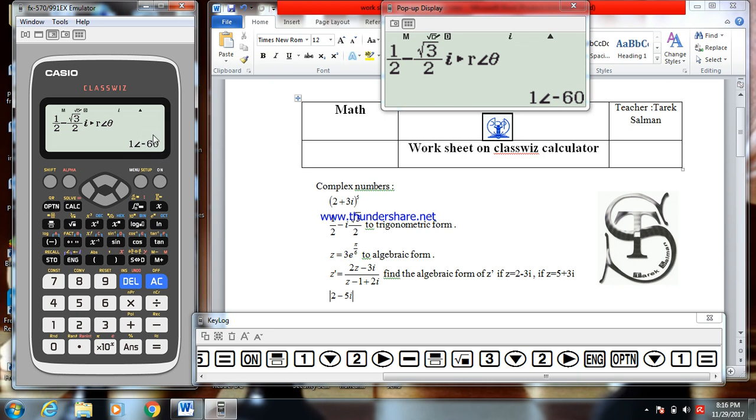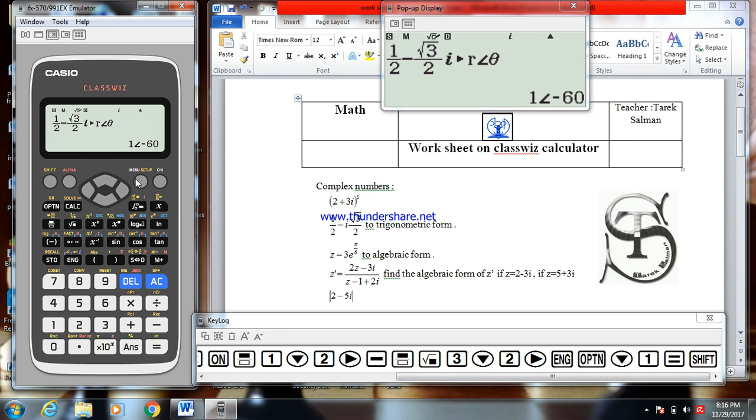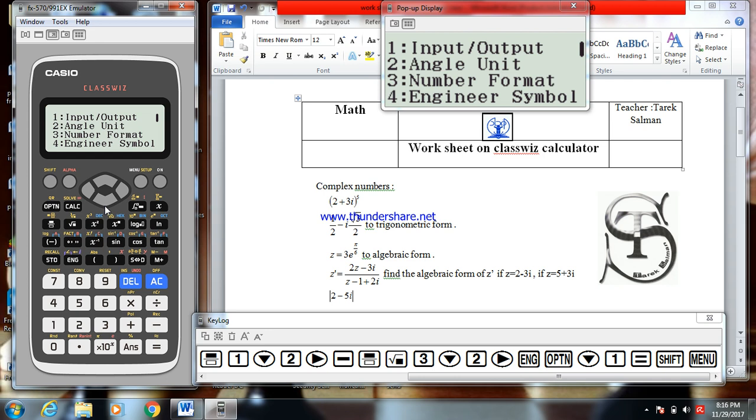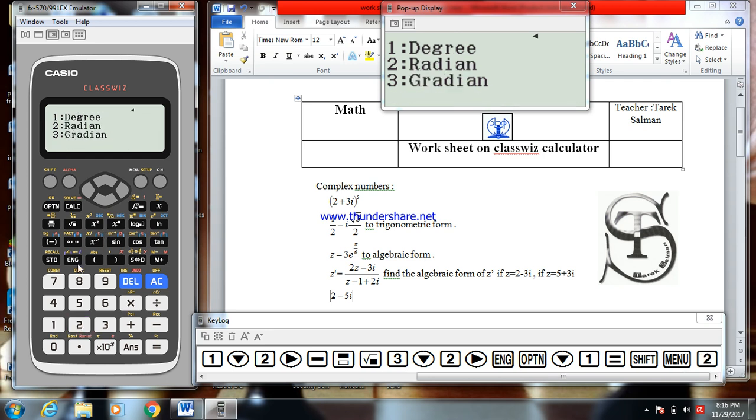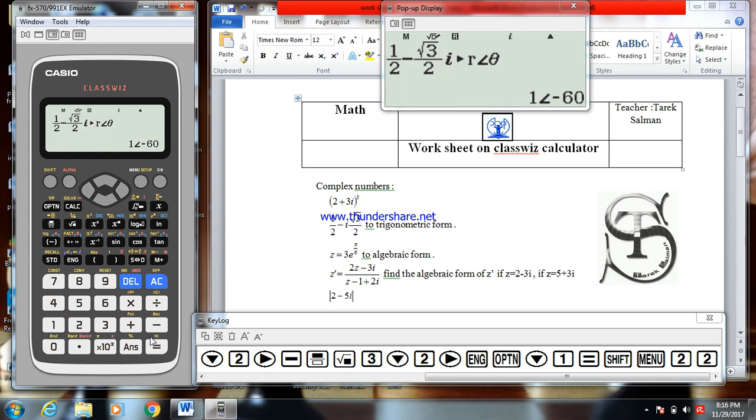This argument is in degrees. To transform this argument to radians, go to shift menu, angle unit 2, and choose radian.